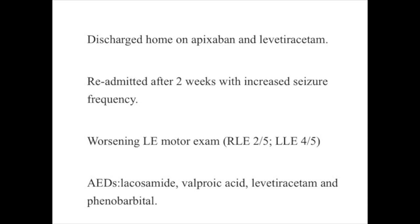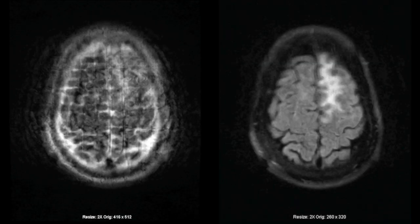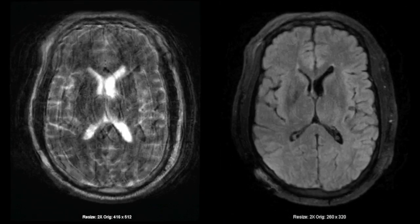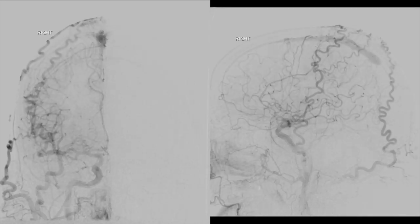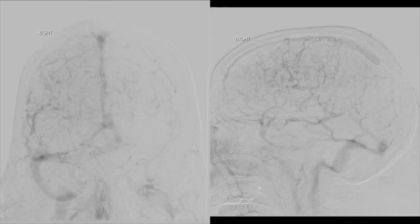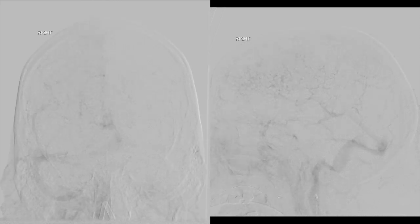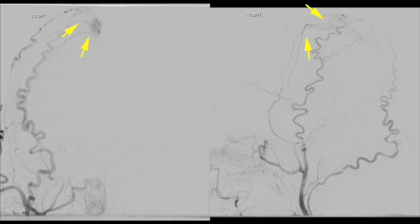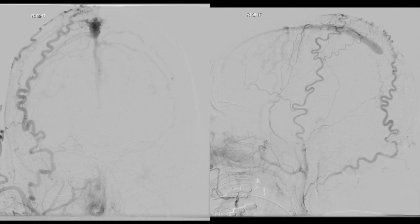Unfortunately, he developed worsening seizures two weeks later and was readmitted. On exam, he had left-sided weakness. Additional anticoagulant medication was required, and a brain MRI showed enlargement of the areas of increased signal suggesting progressive injury from his previous venous sinus thrombosis. On repeat cerebral angiography, it was more apparent that the anterior superior sagittal sinus opacification from the external carotid branches was in fact early in comparison to the arterial-phase flow in the internal carotid artery. It also became clear that the external carotid branches were enlarged, all indicating fistulization of the superior sagittal sinus.